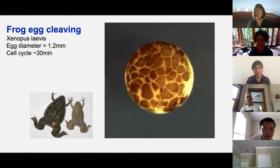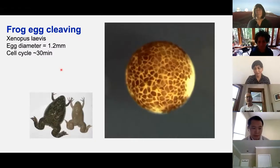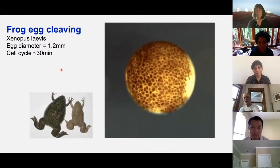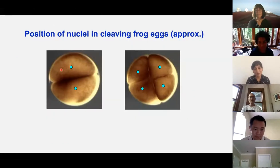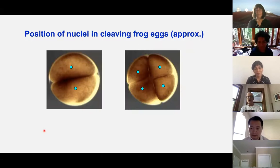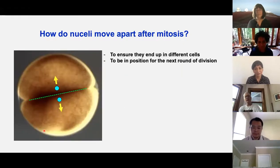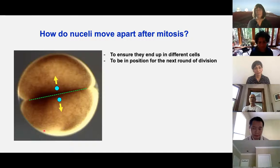These eggs — these are Xenopus laevis — they're about 1.2 millimeters in diameter, and they divide every 30 minutes. I'm showing here, just as a sort of cartoon, the positions of the nuclei imagined here, superimposed on the live movie. We'd have to fix the eggs and render them transparent to actually see the nuclei. I'll focus particularly in the second half of the talk on how the nuclei move apart after mitosis. The nuclei need to move apart to ensure that they end up in different cells, and also to be in position for the next round of division.